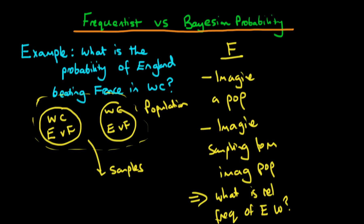I've laboured the point here, but I hope you can see that there is no such thing as a population of England versus France games, so we fall down at this step. Furthermore, when we imagine sampling from that population an infinite number of times, we also fall down at that step because we're sampling from an imaginary population. This is a one-time event, with particular initial conditions — the particular players, the environment, etc. So the frequentist view of probability falls down completely in this circumstance, because we cannot imagine what's the relative frequency of the event occurring in an infinite series of draws.